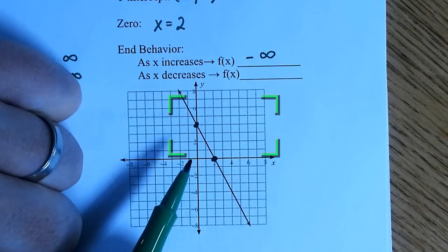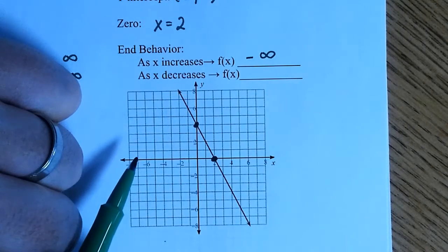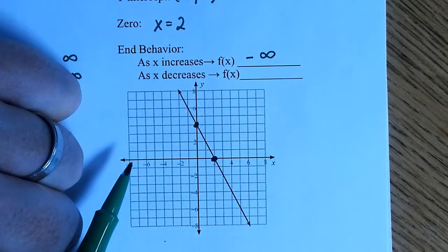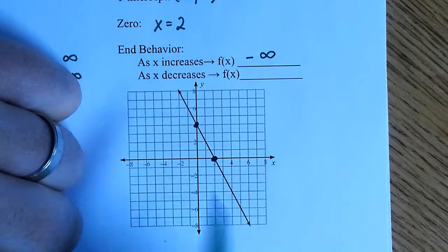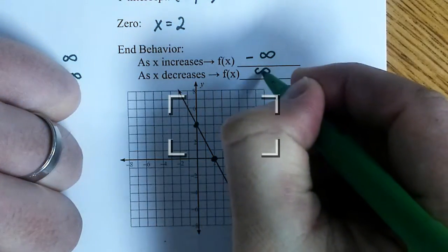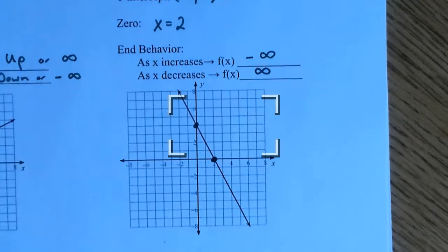As x decreases. So, as x is decreasing, so I'm moving left on my graph, right? So, as I move left, where's my graph going? Up, which is positive infinity. Excellent.